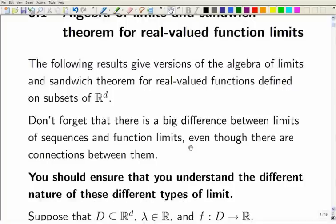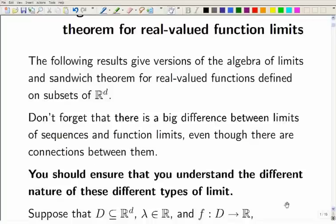When you write some expression down involving a limit, you should always know which kind of limit you're talking about. If you write down limit as n tends to infinity, you're talking about a limit of a sequence of points. If you write the limit as vector x tends to vector a, you're talking about some sort of function limit. Different kinds of limits, related by the definitions in terms of sequences.